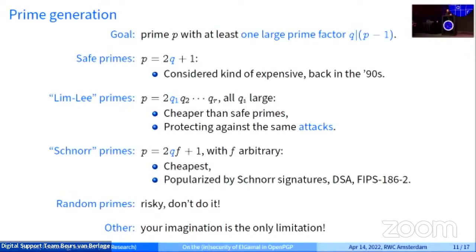I'll give an intuition for the first attack, which doesn't use side channels. The problem comes from the choice of prime. Your goal is to pick a prime P such that P-1 has a large prime factor, giving a strong discrete logarithm problem. One popular choice is safe primes of the form 2q+1 where q is prime, but these are expensive to generate. Another choice, from a paper by Lim and Lee, uses 2 times a product of many large primes — easier to generate but protecting against the same attacks. A third way is the Schnorr style used for DSA in FIPS, where you first choose q, the prime order, then multiply by a cofactor until you find a prime of the form 2·q·cofactor + 1.